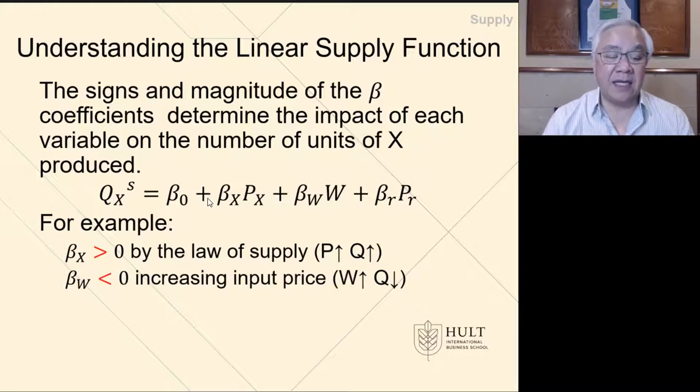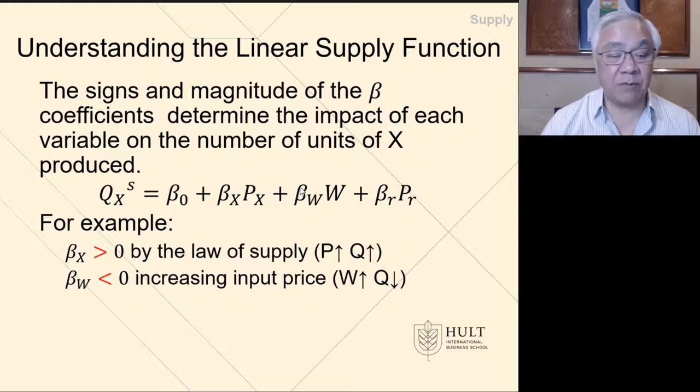Next is W, which is one of the input prices. We see that if input goes up, then we would expect the quantity to go down. That would be normal. So if we increase the price of W, the quantity would decrease for the supply at a given number because our cost just went up.